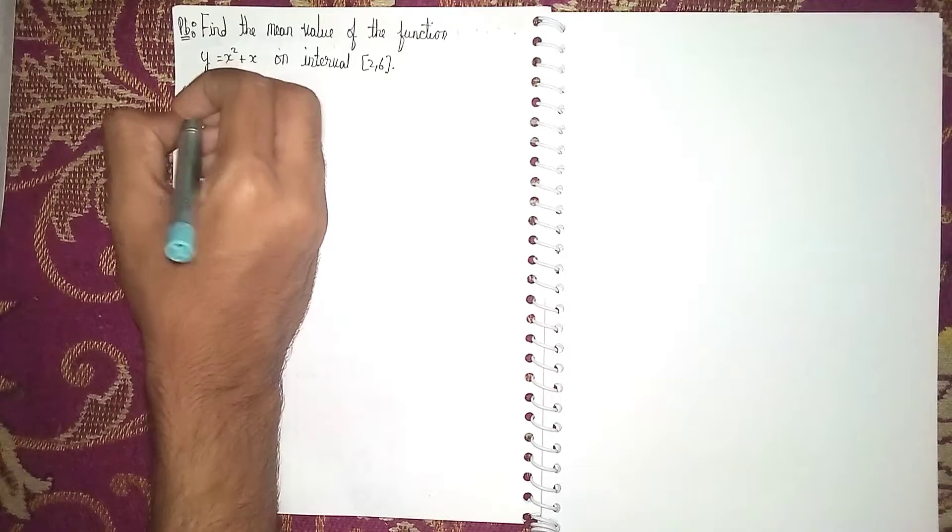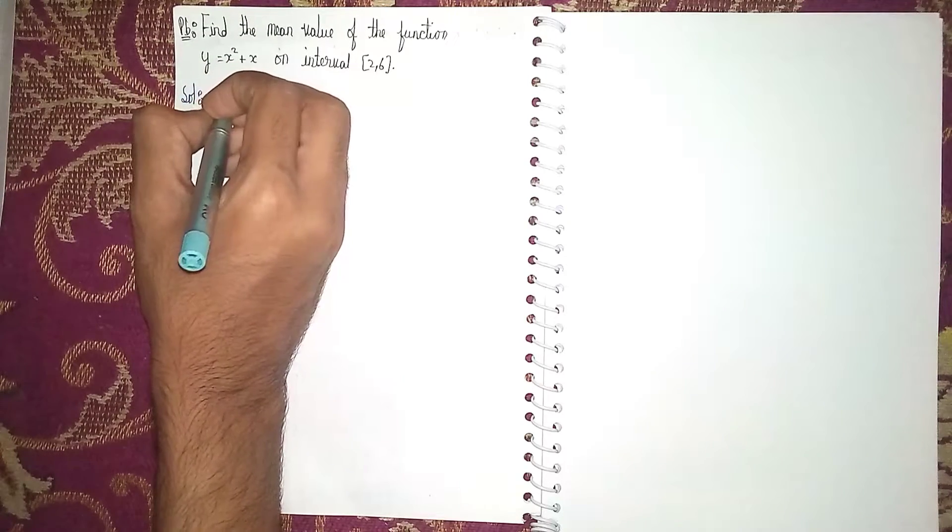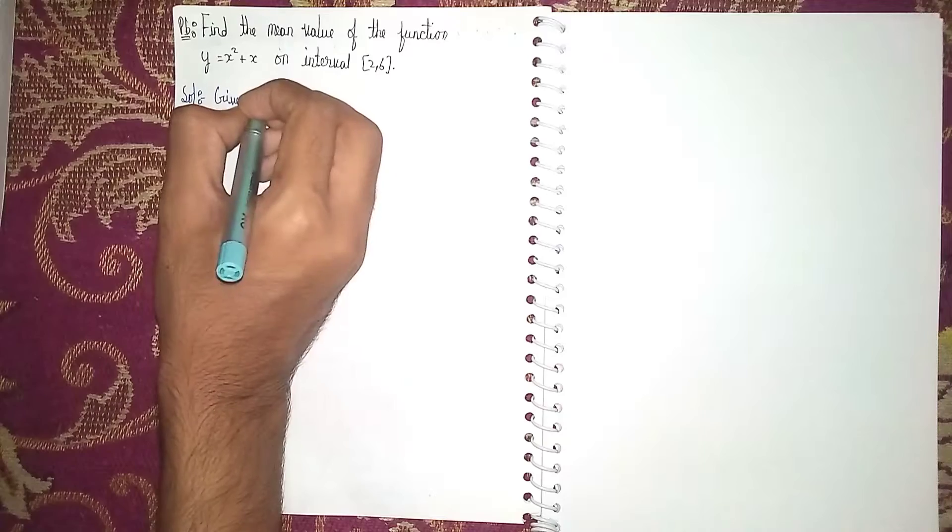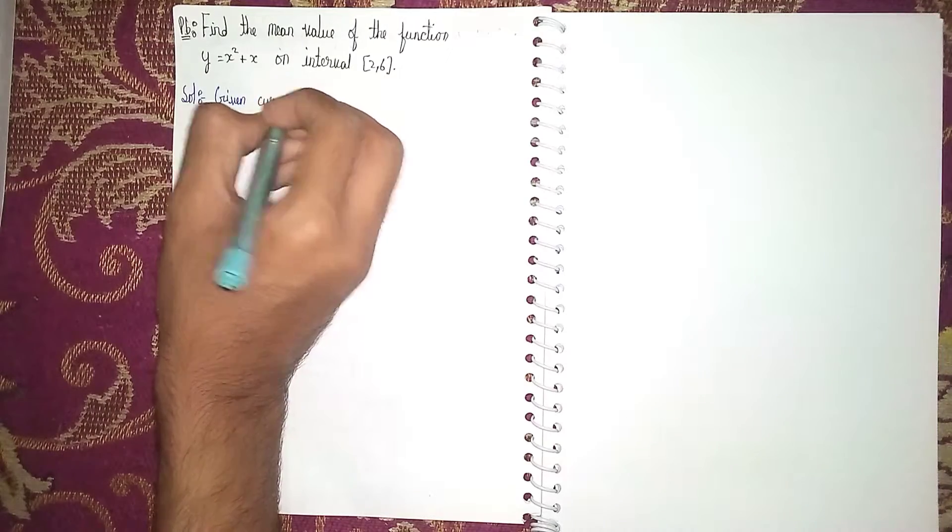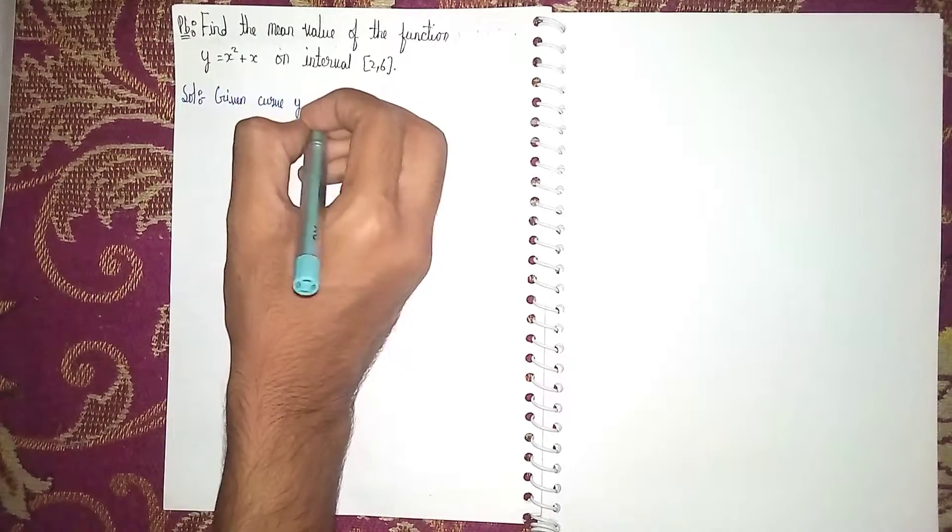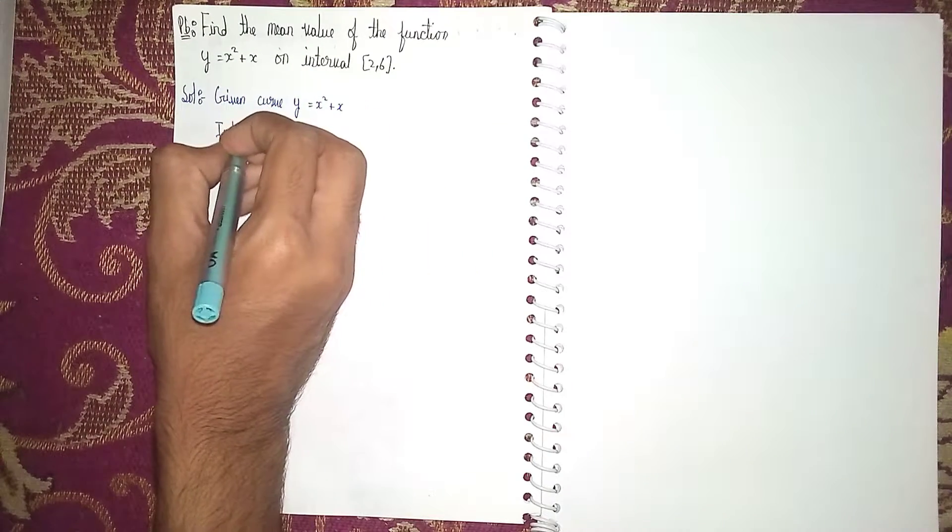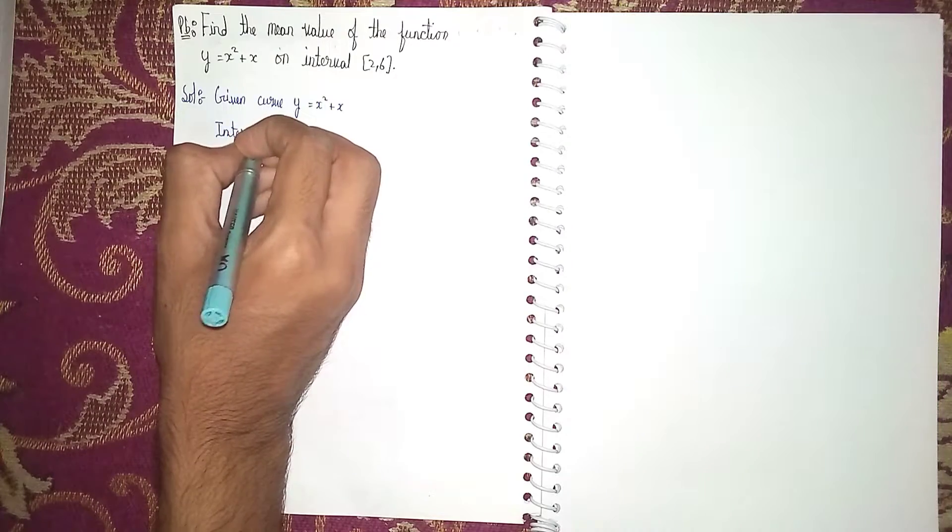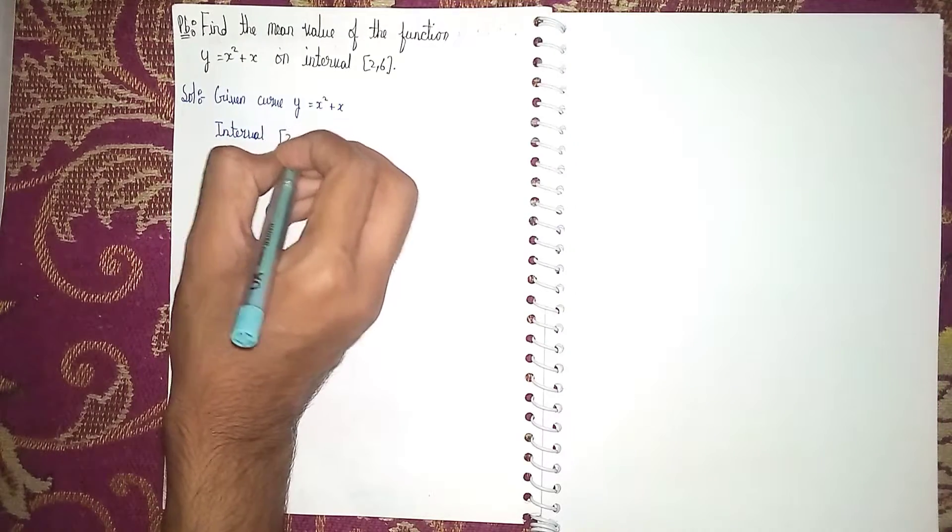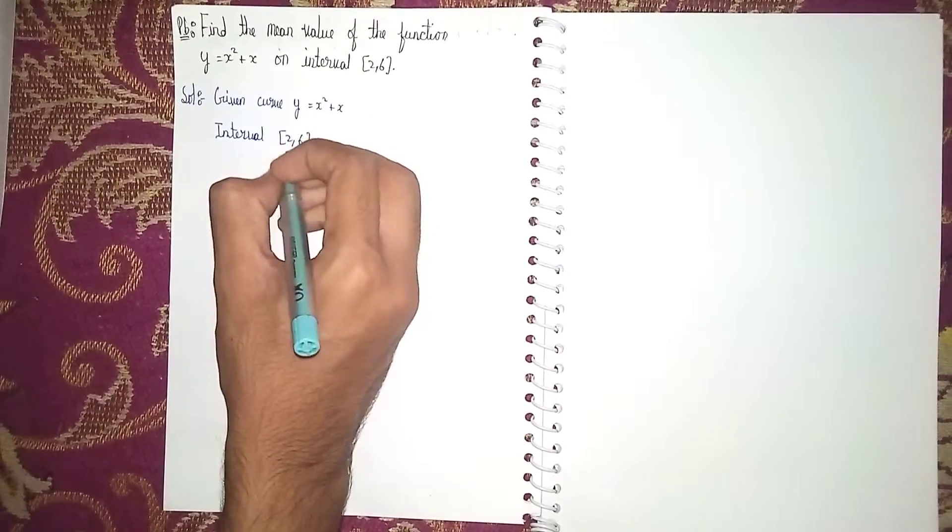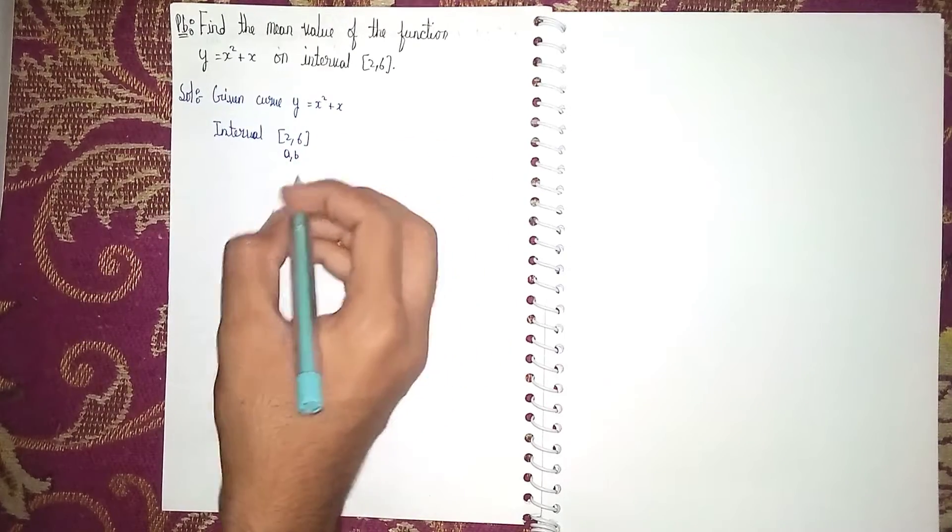Solution: given curve y = x² + x, and interval [2, 6]. The interval is also known as limits a, b. This is a = 2 and b = 6.